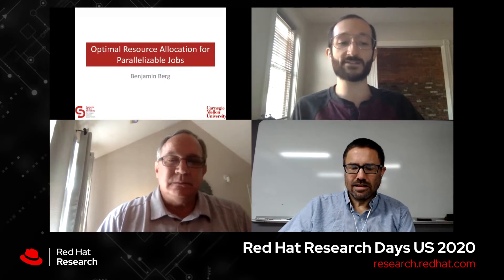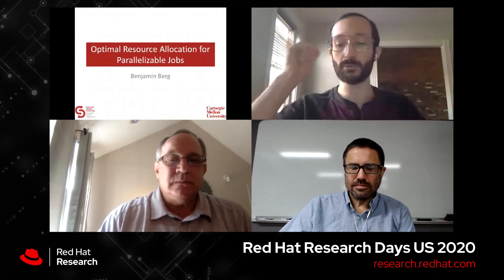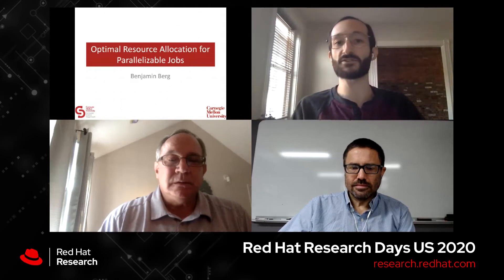I'm going to talk about optimal resource allocation for parallelizable jobs, summarizing results from a couple of our recent papers. This gives an overview of the research I do with my advisor, Moore Harkle-Balter, in the computer science department at Carnegie Mellon University. Almost all modern computer systems are built to exploit parallelism in some way — this could be the multi-core chip in your laptop, parallelizing across many cores in a supercomputing center, or parallelizing across servers in a data center.